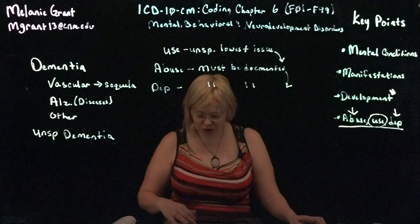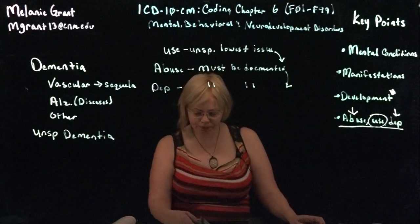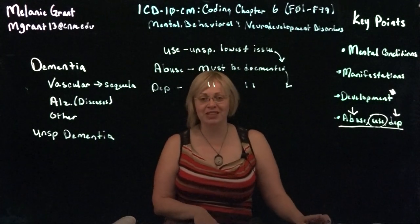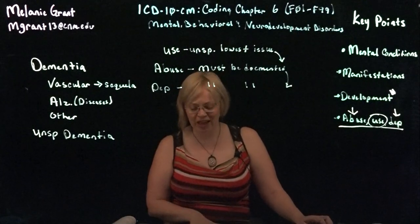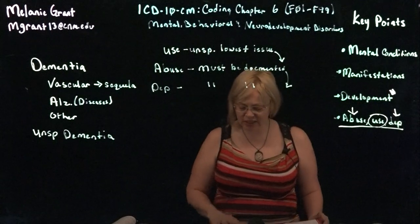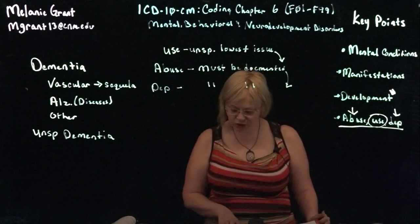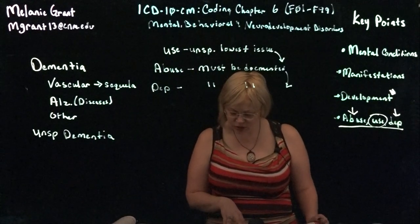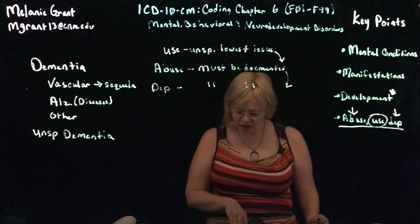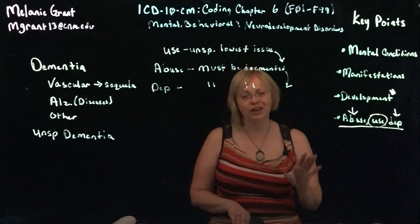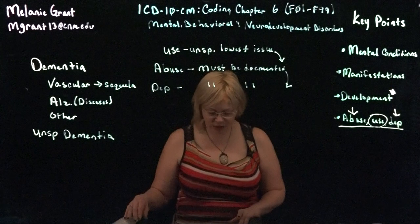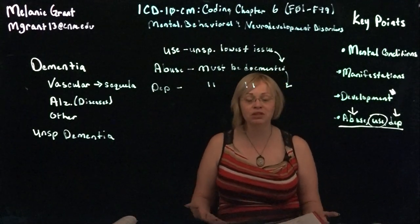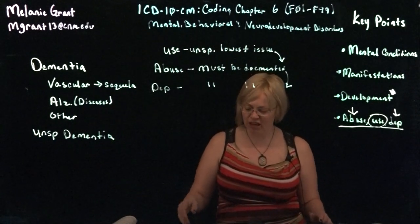Behavioral syndromes associated with psychological disturbance and physical factors is the next block on page 561, starting with eating disorders, sleep disorders, and sexual dysfunction disorders, continuing for about half a page on non-psychoactive substances and unspecifieds. Disorders of adult personalities and behaviors — including impulse disorder, obsessive-compulsive, and paranoid — are also found here. Gender identity disorders were listed in the mental health section but will be changed in the 2020 code book to the Z code section instead of mental health. Under intellectual disabilities, F70 through F79 on page 564, code first any associated physical or developmental disorders.